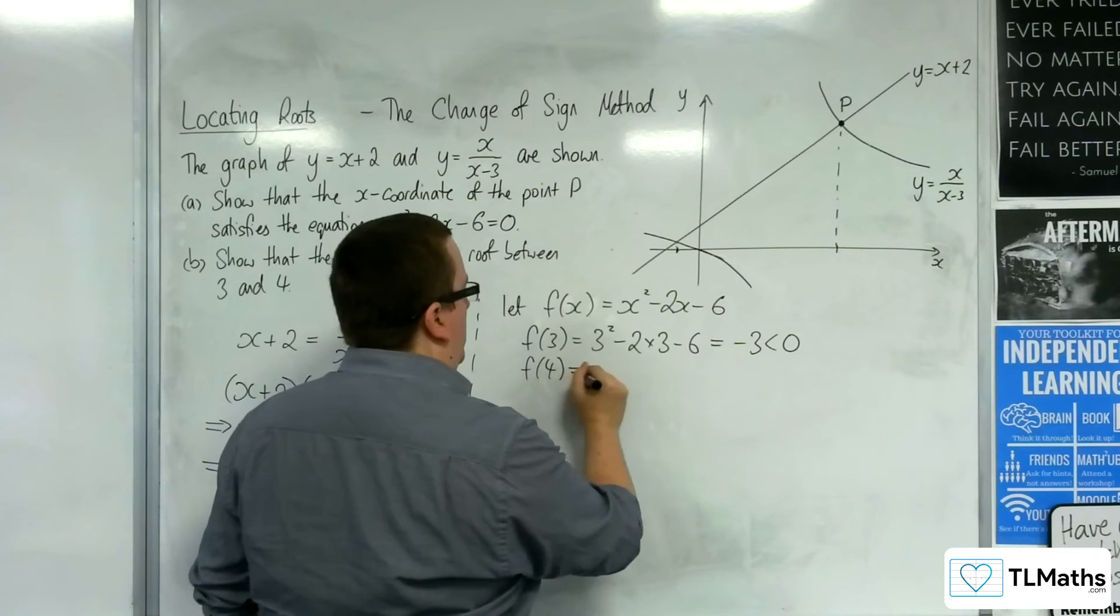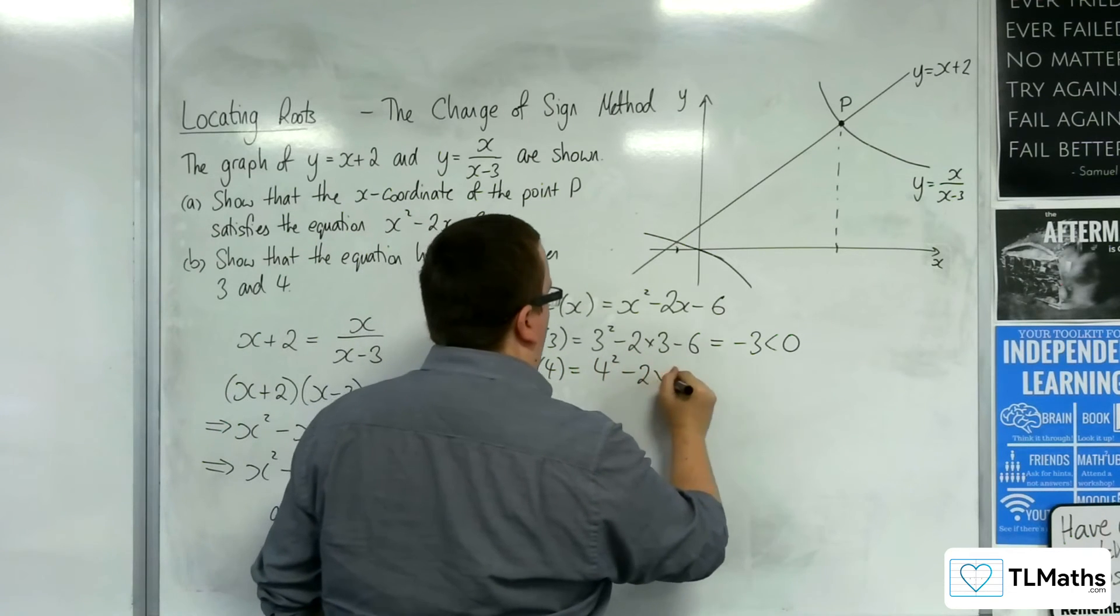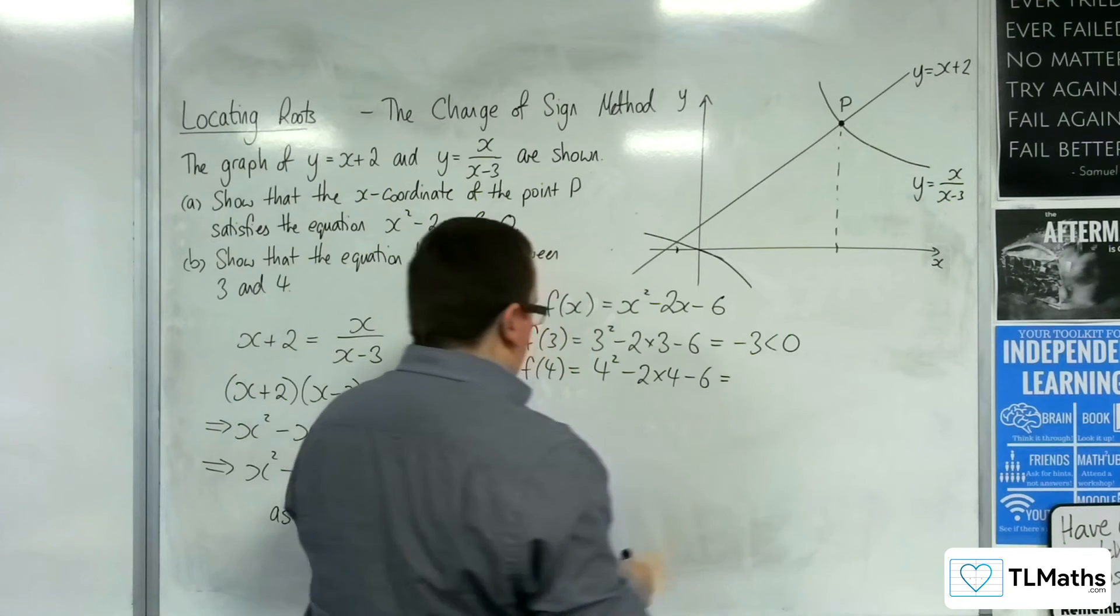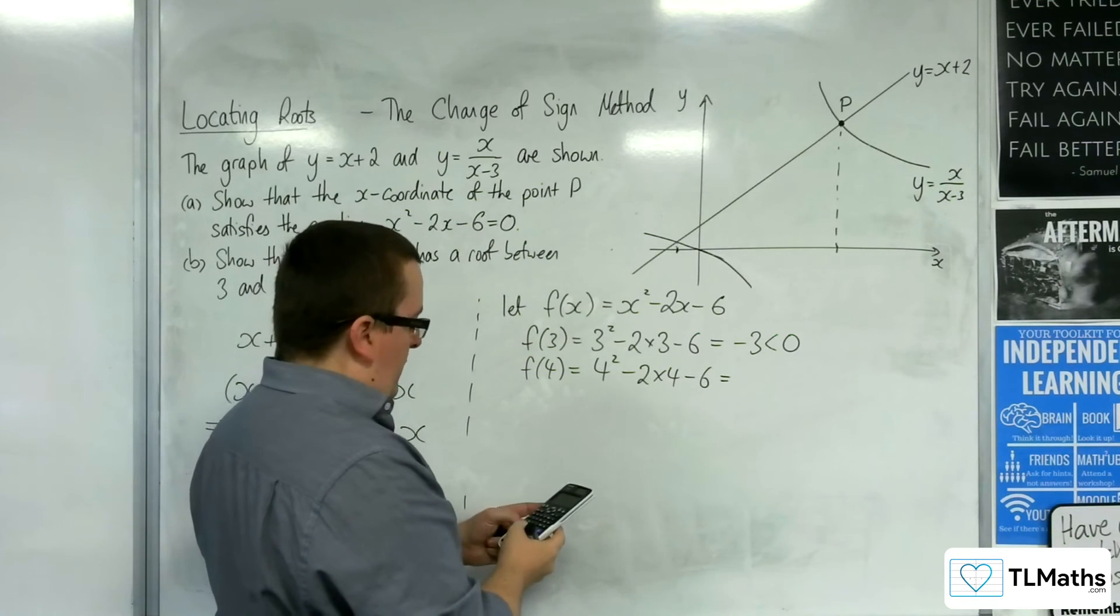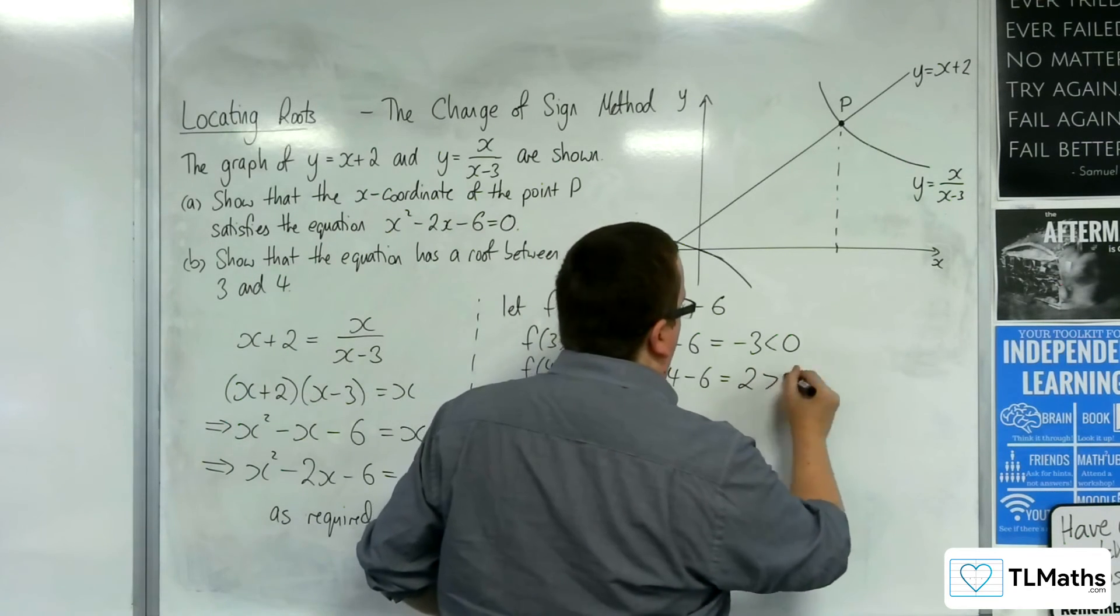And then f(4). We've got 4² - 2 lots of 4, take away 6. What's that? 16, take away 8, take 6, so that's 2. So that's positive.